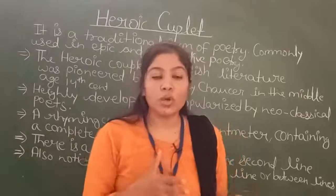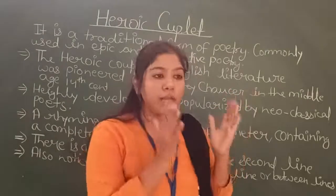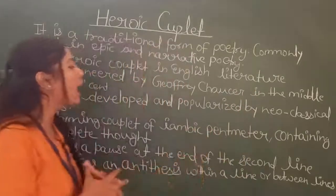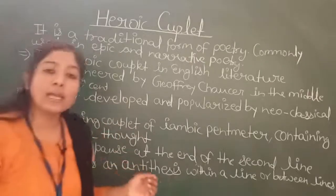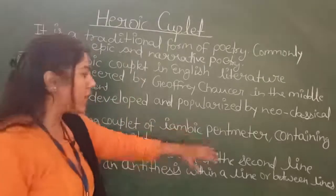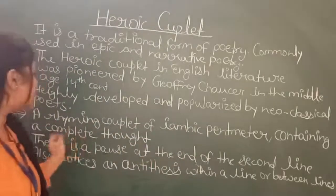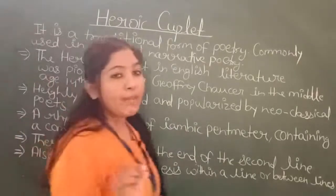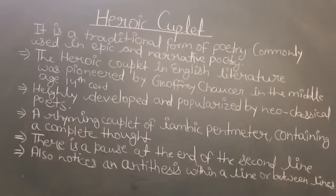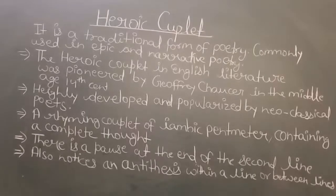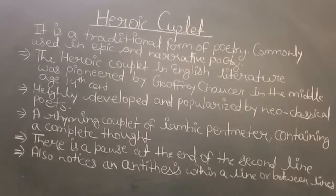It was further developed by neoclassical poets. In your first year syllabus there are two ages — Elizabethan Age and Neoclassical Age. The neoclassical poets made more use of heroic couplet. It is a rhyming couplet of iambic pentameter, and I have mentioned that iambic pentameter is used in the heroic couplet — I have made a separate video on that. There is a pause at the end of the second line, and you will also notice an antithesis — opposite words — within or between the lines.